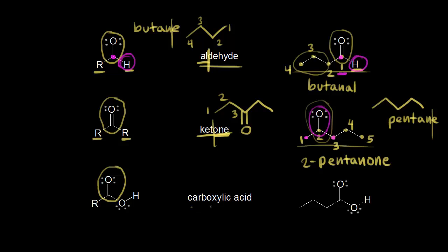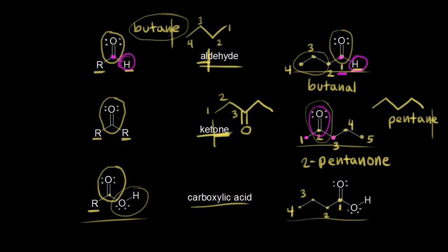Next we have a carboxylic acid. A carboxylic acid has an R group on one side of the carbonyl and an OH on the other side. Some students think this is an alcohol, but it is not — this OH is right next to the carbonyl, and that changes the properties. Carboxylic acids have different properties from alcohols. For an example, the carbonyl carbon gets number one, then carbon two, carbon three, and carbon four — so a four-carbon carboxylic acid. A four-carbon alkane is butane, so the ending becomes -oic acid, giving us butanoic acid.